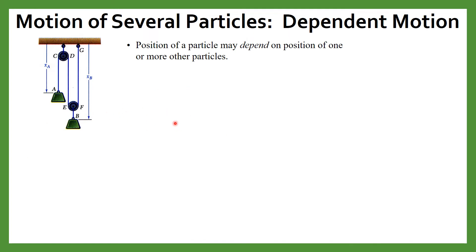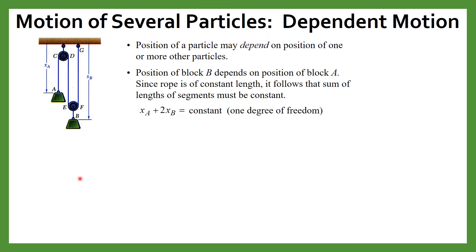Now consider this diagram in which several particles are dependent on each other. The position of block B depends on the position of block A. In these types of problems, a very important thing is that the length of the rope will always remain the same — that will help you to solve these problems. If we consider the length of the rope, from A the length is xA, and xB counts twice, so the total length is xA plus 2xB, and that should remain constant during the entire motion.